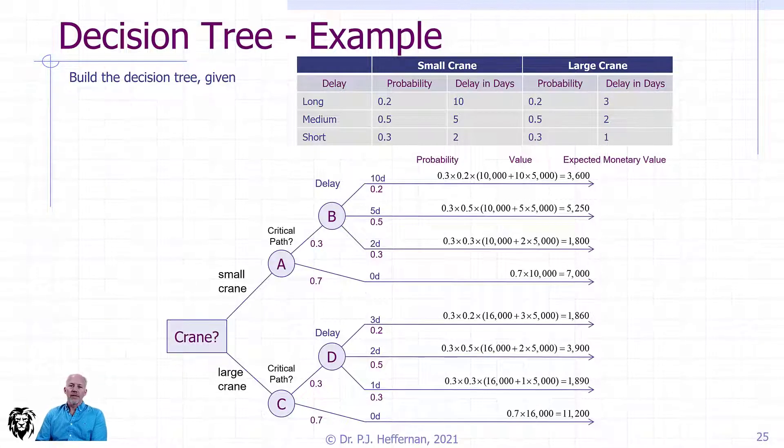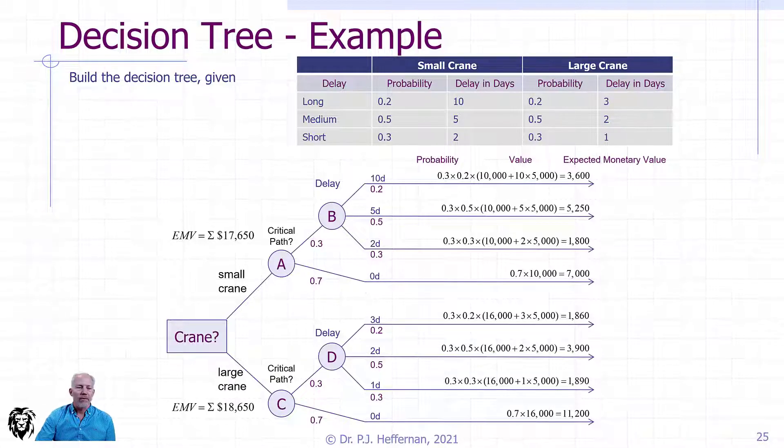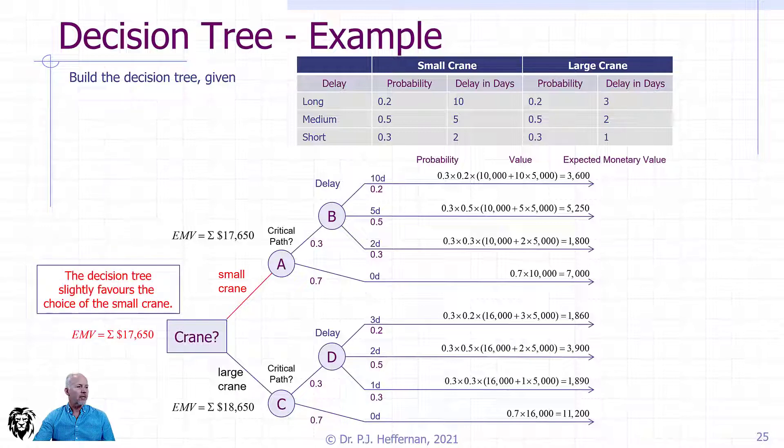We still have another step because we have to roll that up towards our decision point. We can calculate that on node A, the equivalent monetary value is $17,650, whereas the equivalent value on the large crane path at node C is $18,650. We're talking costs, in which case we want a lower value. We see that the best option is the small crane. So we make a decision to go with the small crane and we know that our equivalent value is just slightly less than $18,000.